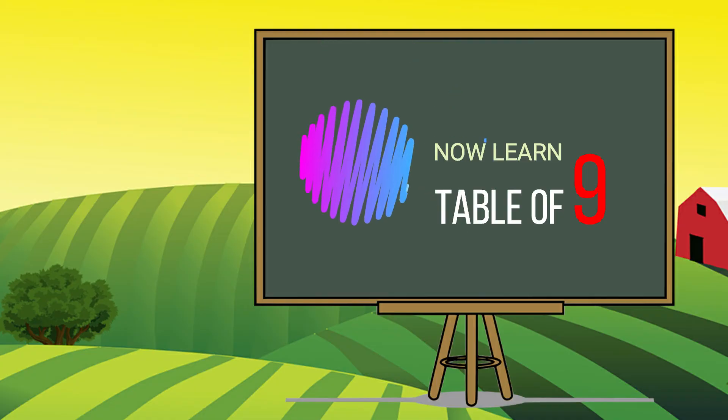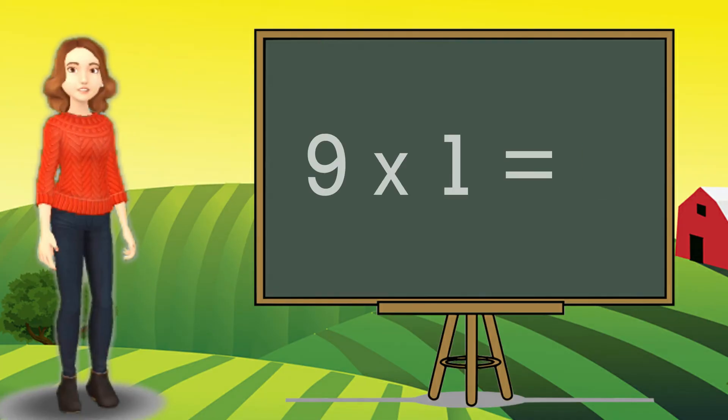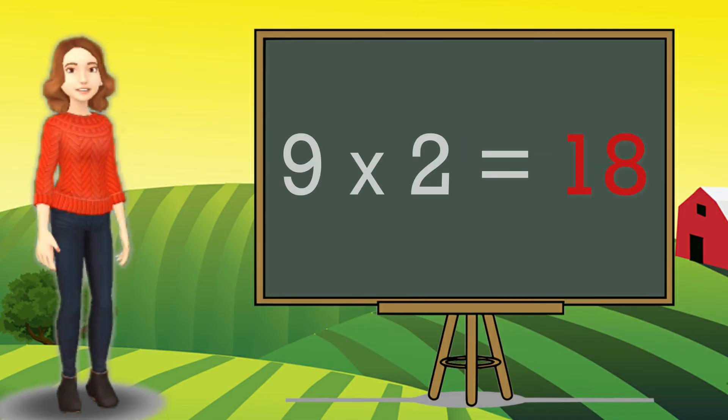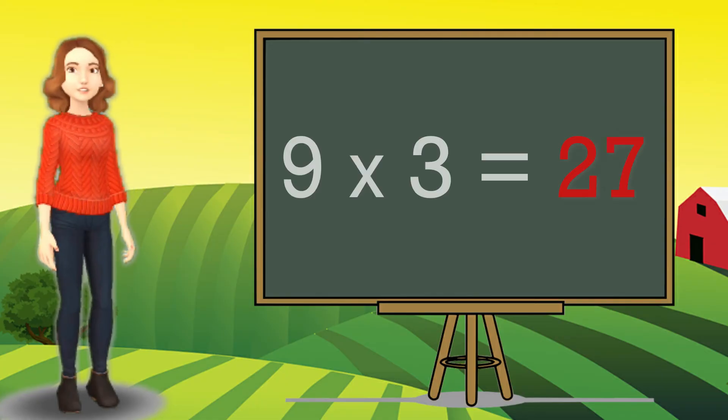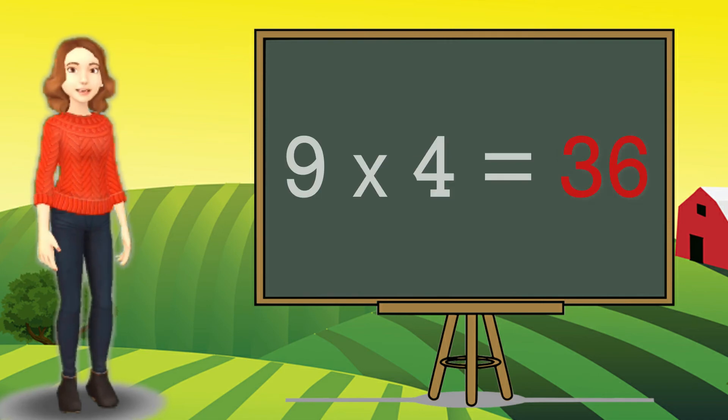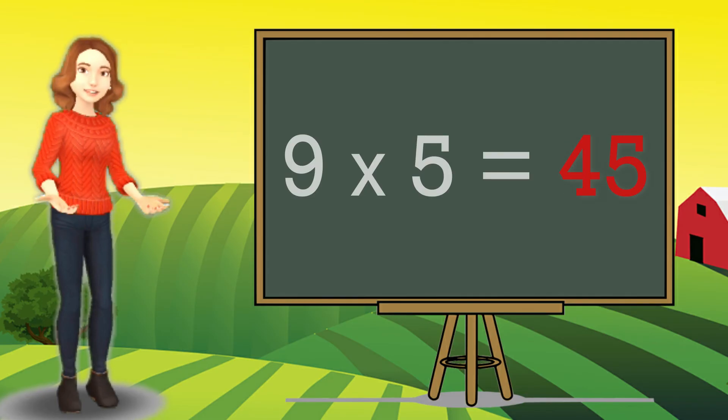Now learn table of 9. 9 ones are 9. 9 twos are 18. 9 threes are 27. 9 fours are 36. 9 fives are 45.